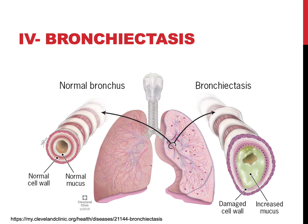Bronchiectasis is defined as permanent dilation of bronchi and bronchioles. This is caused by destruction of smooth muscles and the supporting elastic tissue, so it's an irreversible dilation. It affects mainly the bronchi and the bronchioles. You can compare that with emphysema, which is defined as permanent dilation of the airways distal to the terminal bronchioles. The destruction of smooth muscles and elastic tissue in bronchiectasis is typically associated with necrotizing infections.